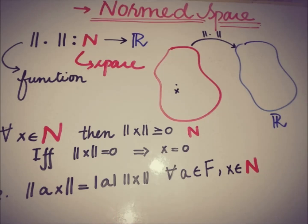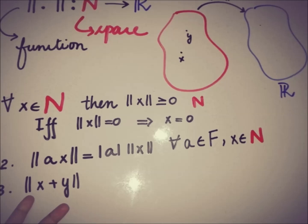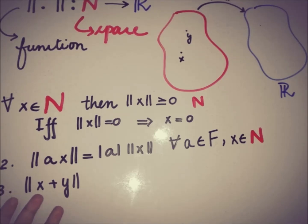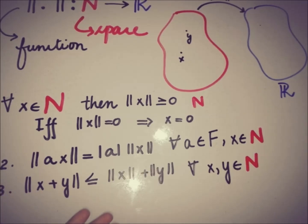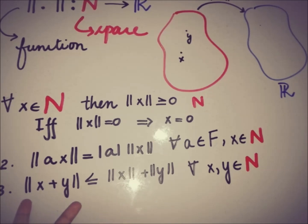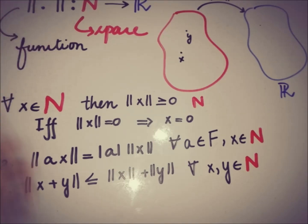The third axiom is: if we have a sum of two elements x and y from space N and we take the norm of this sum, it must be less than or equal to the norm of x plus the norm of y. This is the triangle inequality — the individual norms of two elements from N must be greater than or equal to the norm of their sum.